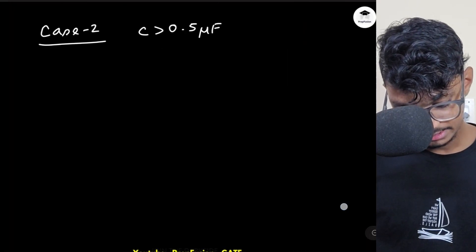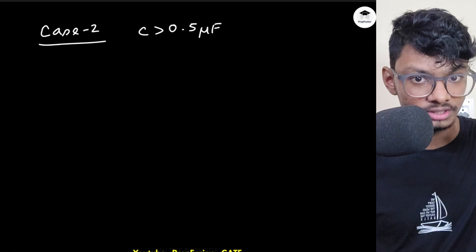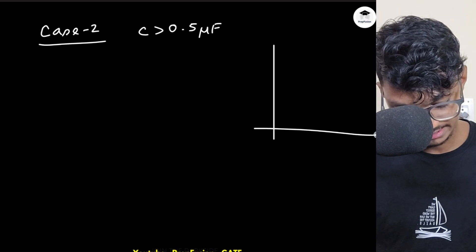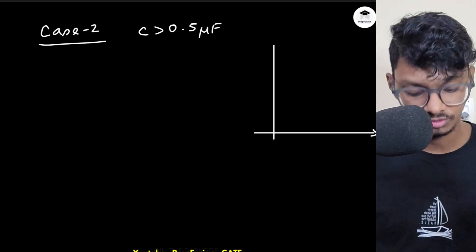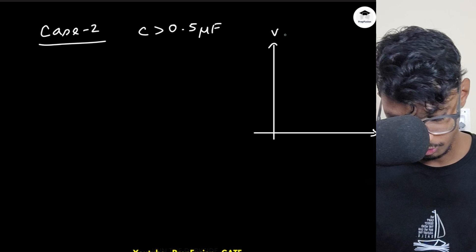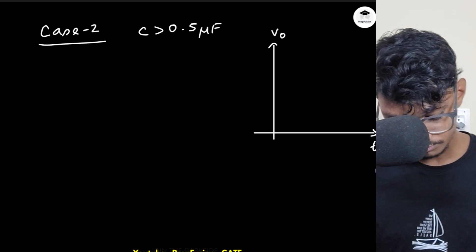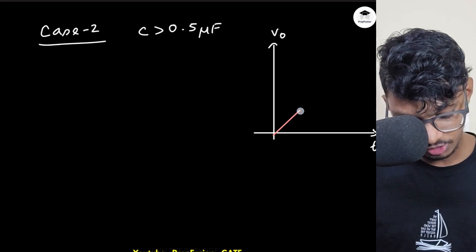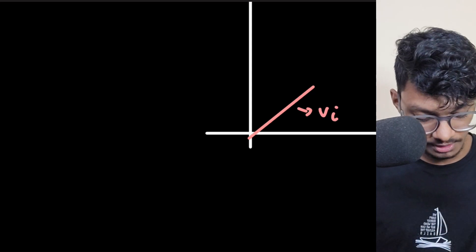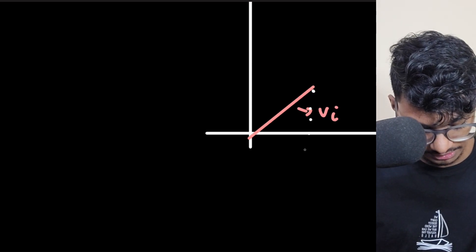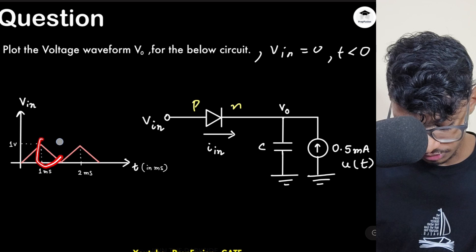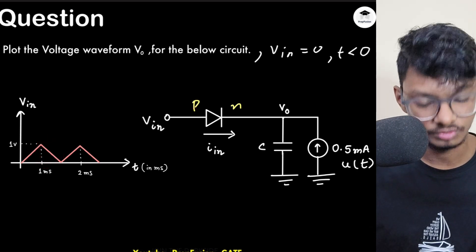Since the n-side slope is lower than the p-side slope, the diode is on from 0 to 1 milliseconds. Tell me in the comments: what will be the slope of the output voltage from 0 to 1 milliseconds? The output will be a straight line following the input voltage. At 1 millisecond, something interesting happens.